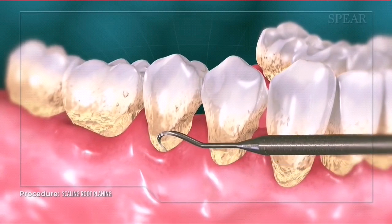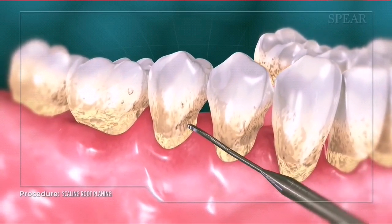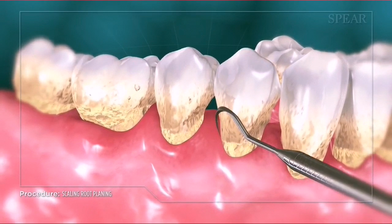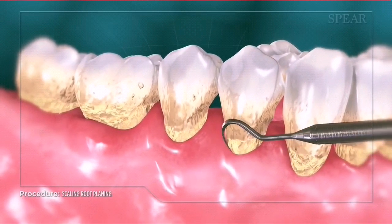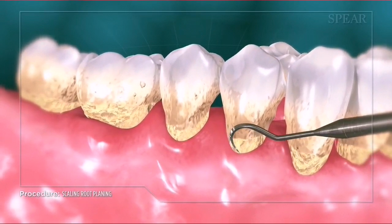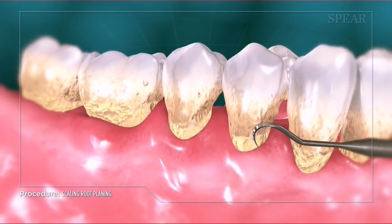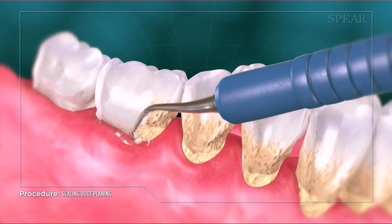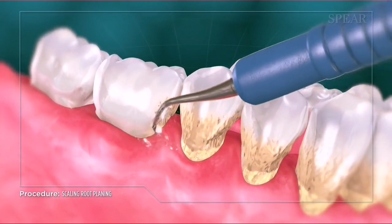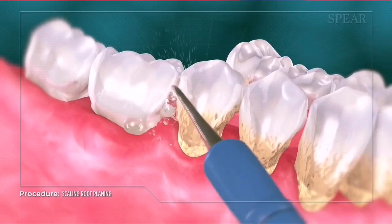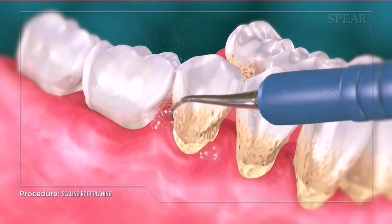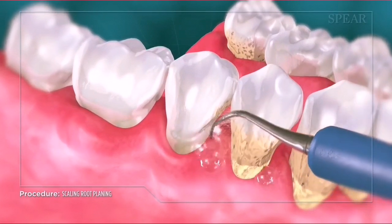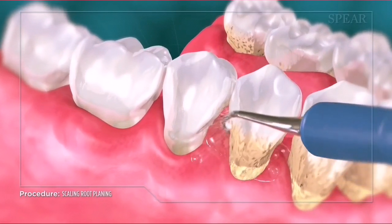Your doctor can recommend a procedure called scaling and root planing to remove these deposits from your teeth. Scaling and root planing is a specialized procedure that removes excessive calculus and bacterial deposits beneath the gum line, and is usually performed with a hand scaler and an ultrasonic cleaner, which uses high-frequency vibration to separate the calculus from the tooth.